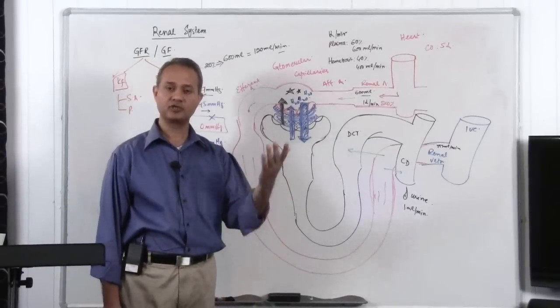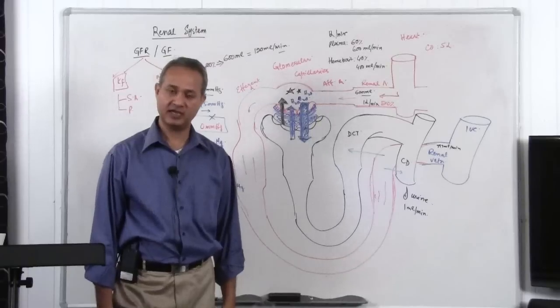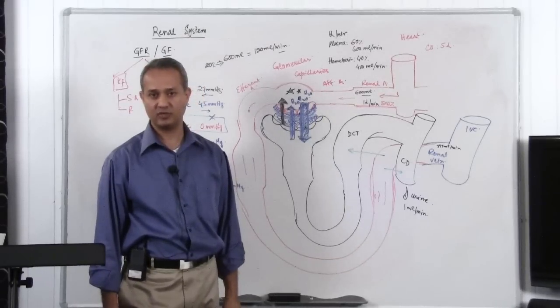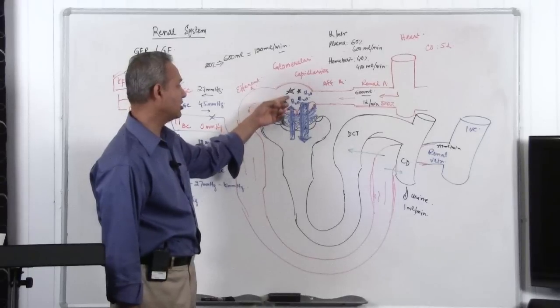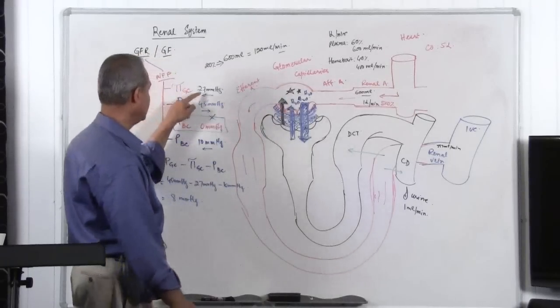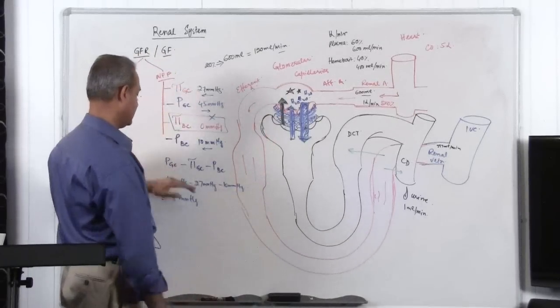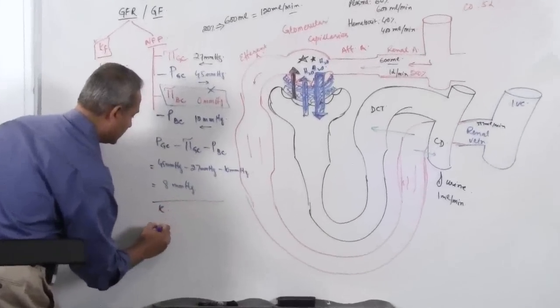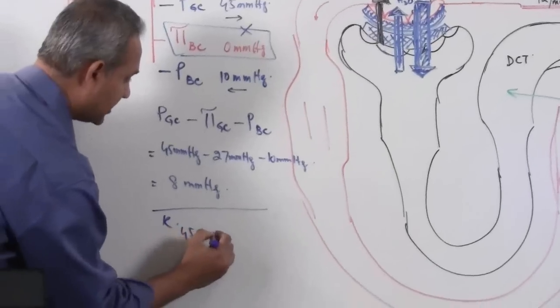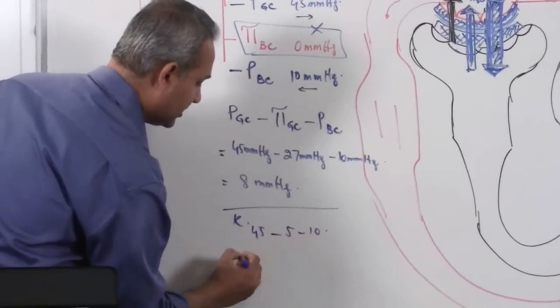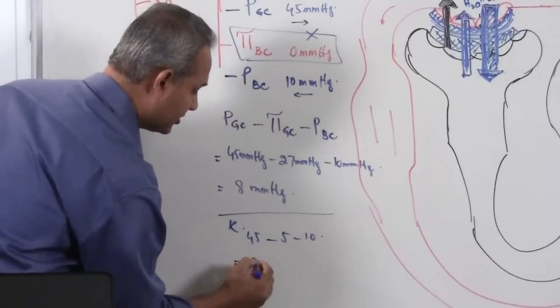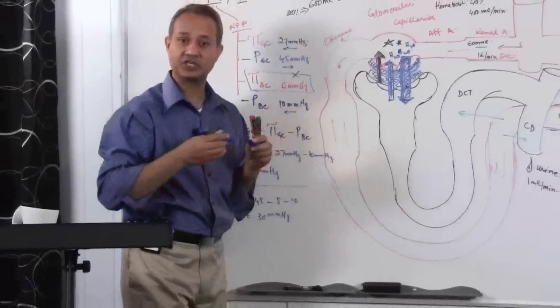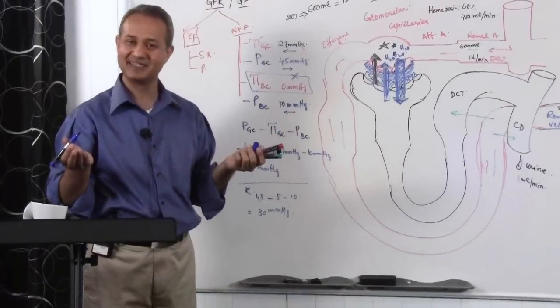For example, quashiorkor is a very common disease in African or poor countries. Malnutrition, there is less proteins in the body. What happens? Less proteins, less oncotic pressure. This pressure goes down. Let's say it goes down to 5. If you put that over here, that would become what? So quashiorkor, 45 millimeters, minus 5, minus 10, equals what? 15, 45, 30. 30 millimeters of mercury, that is now a greater pressure and GFR would increase, right?